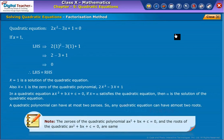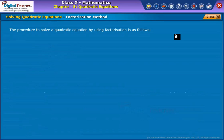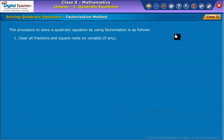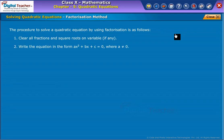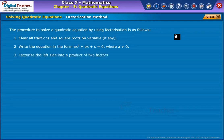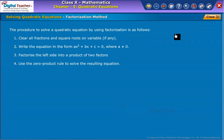Now let us learn how to factorize the given quadratic equation with the help of an example. The procedure to solve a quadratic equation by using factorization is as follows: clear all fractions and square roots on the variable, if any; write the equation in the form ax squared plus bx plus c equals 0, where a is not equal to 0; factorize the left side into a product of two factors; use the zero product rule to solve the resulting equation.